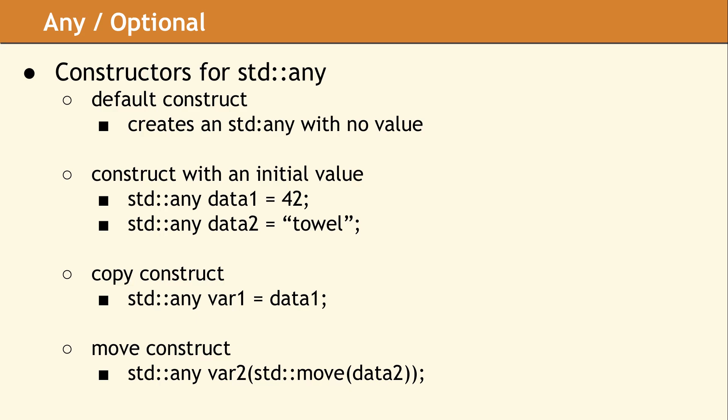The std::any class has one default constructor, which creates an Any variable which contains no value. You can also construct an Any supplying an initial value, which will be stored exactly as provided, with no conversion.